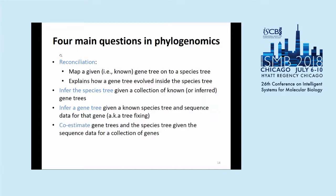The ultimate kind of computational problem here is co-estimation, which means: given a bunch of sequence data from various genes, your program should return both the species tree and all gene trees, all estimated together in a statistical fashion that takes into account the discordances between gene trees and the species tree, but also their dependencies.